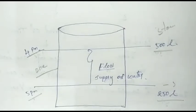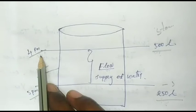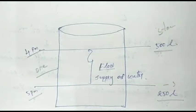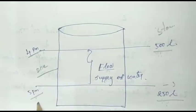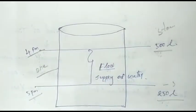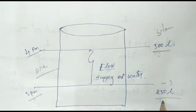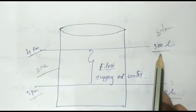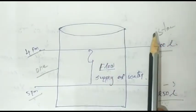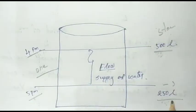Now we have a water tank. What are you doing at 4 PM? You can check the water tank. What are you doing at 5 PM? Then we have 2 liters. The water tank is 100 liters. If you go at 4 PM, there is 5 liters. If you look at 5 PM, there is 2 liters. So this is the stock — it is at the point of time.